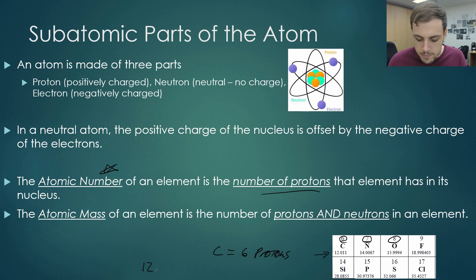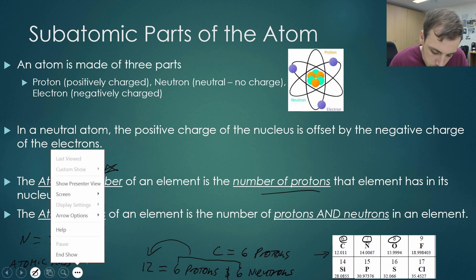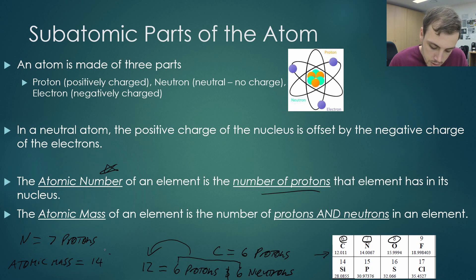Now because the atomic mass is 12, we then know that we must have six protons and six neutrons. Because six plus six will give you 12. And it's the same deal with nitrogen. So nitrogen has seven protons, as we can see here by its atomic number. Now if we look down at its atomic mass, we can see that the atomic mass equals 14. Therefore, it must have 14 minus seven, seven neutrons.